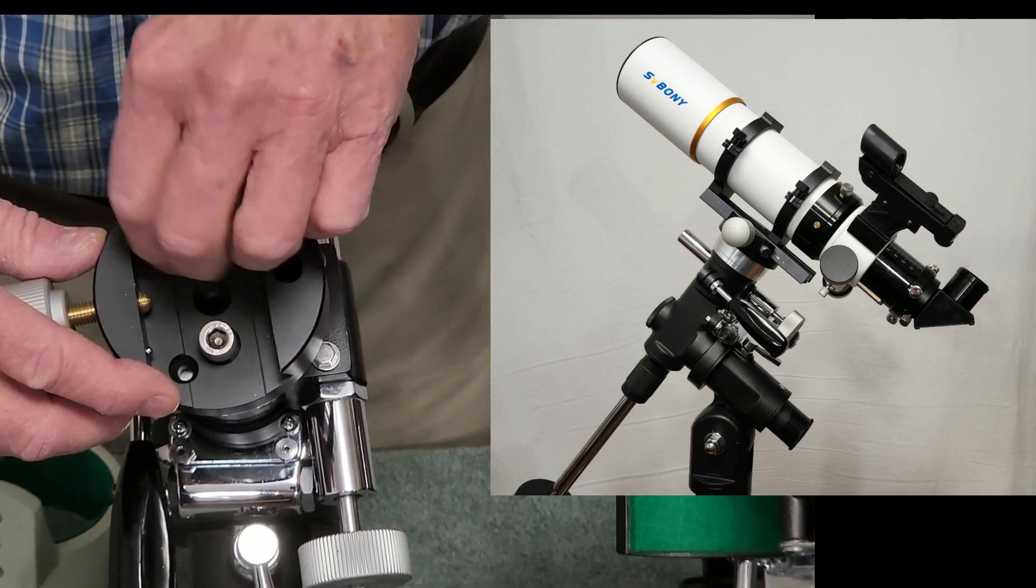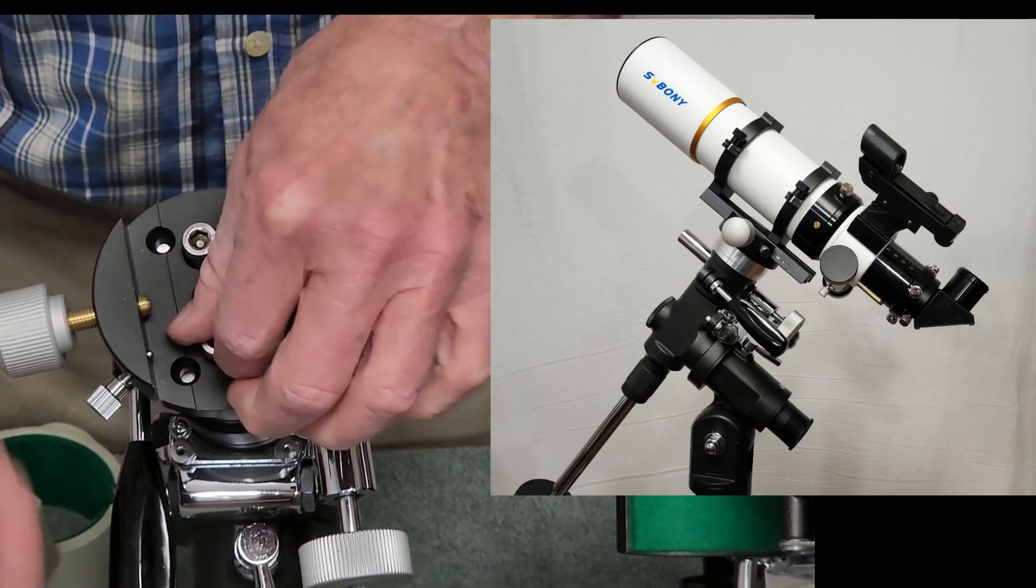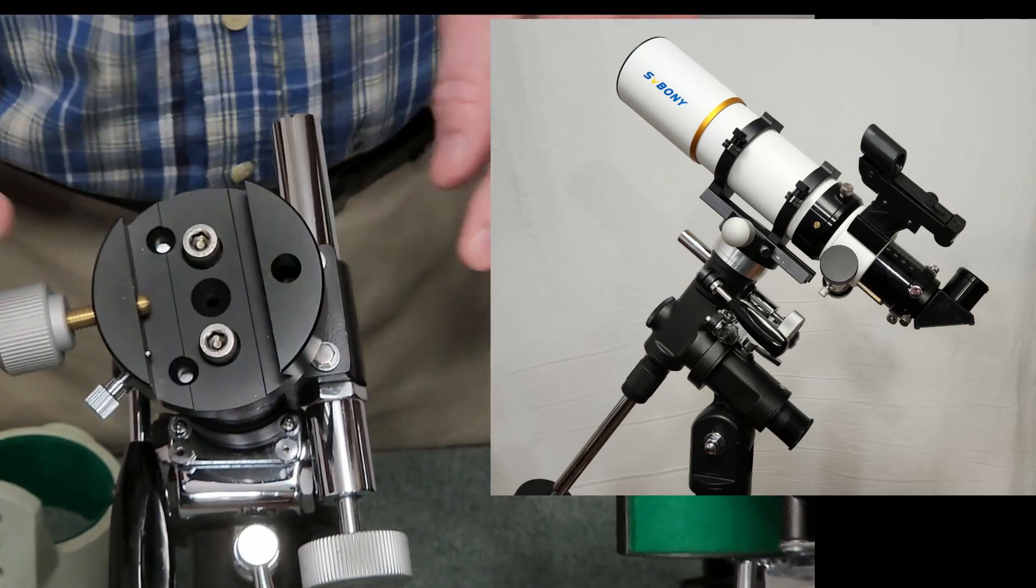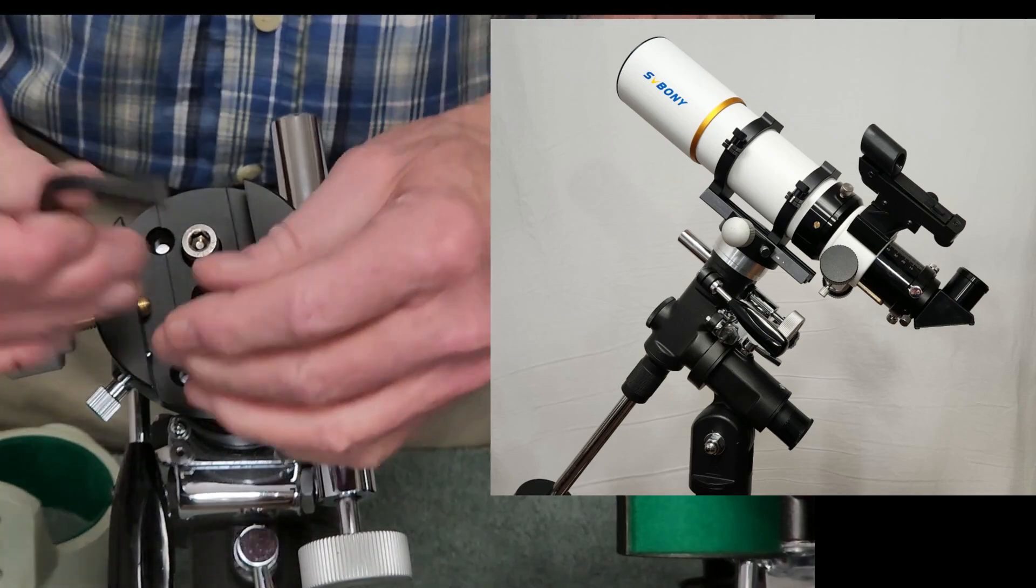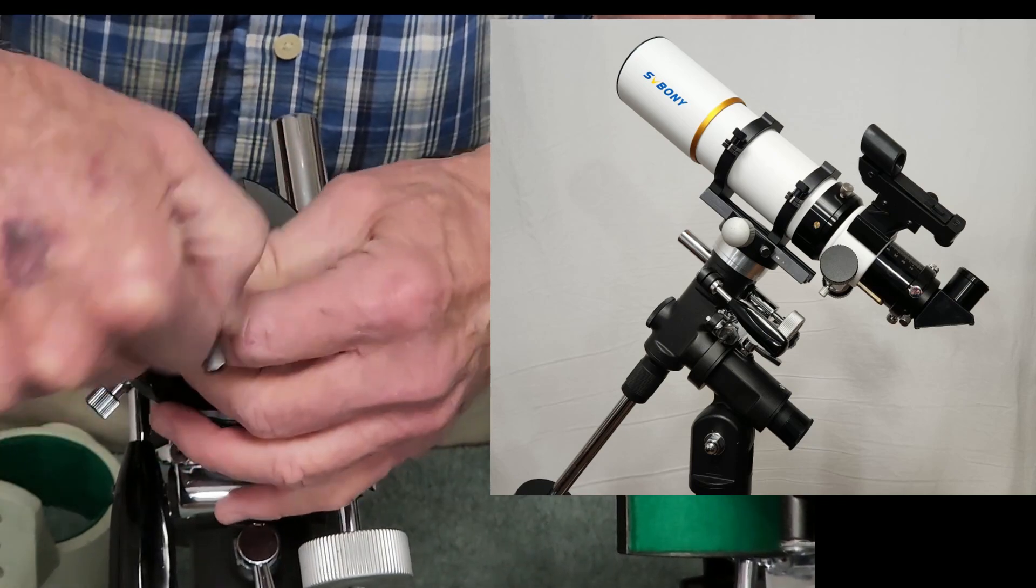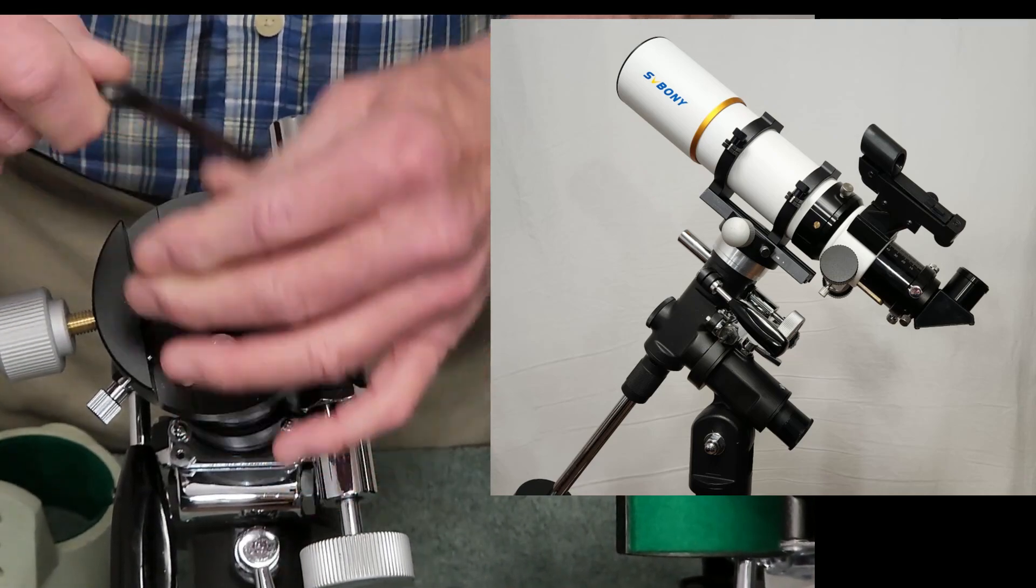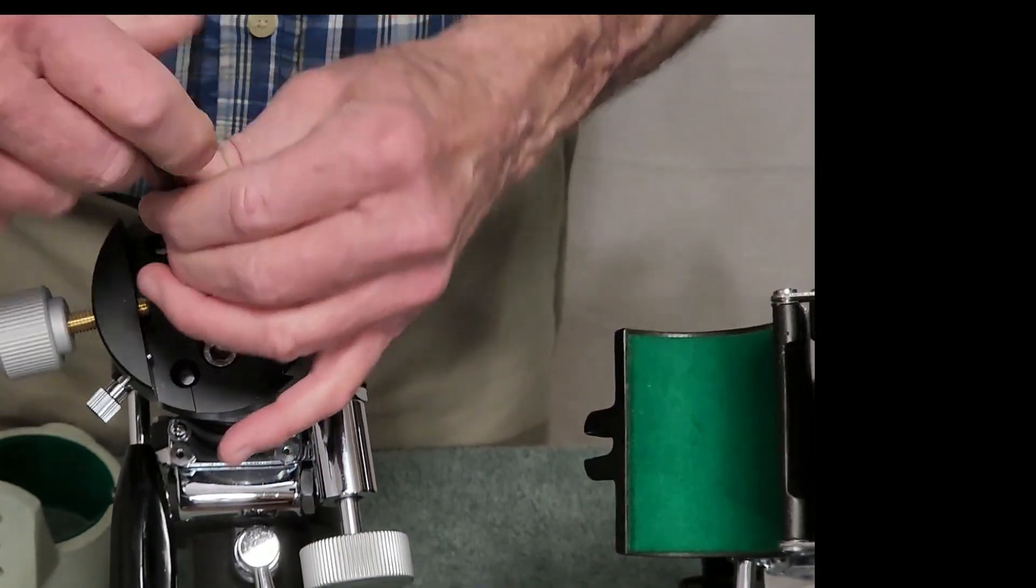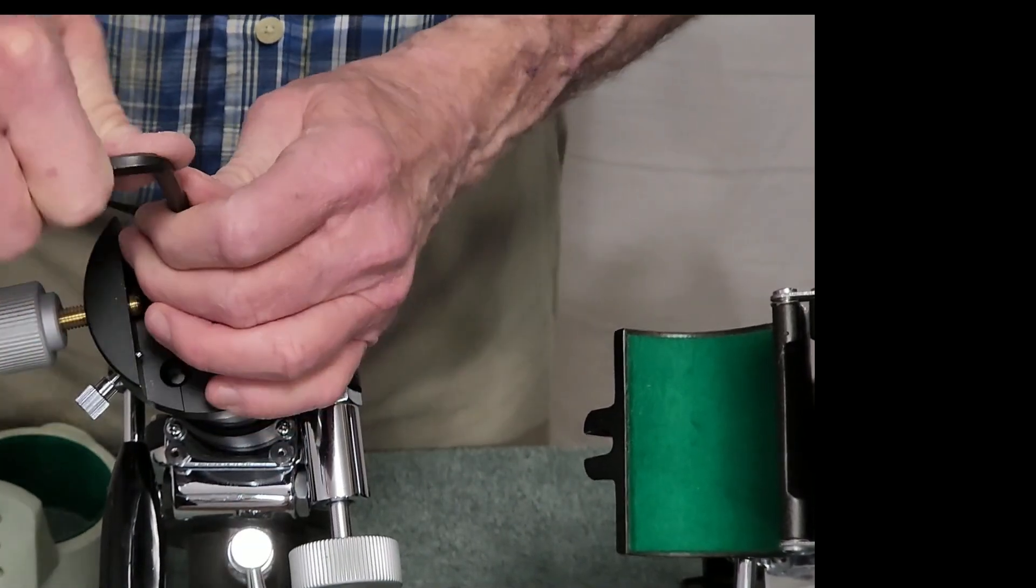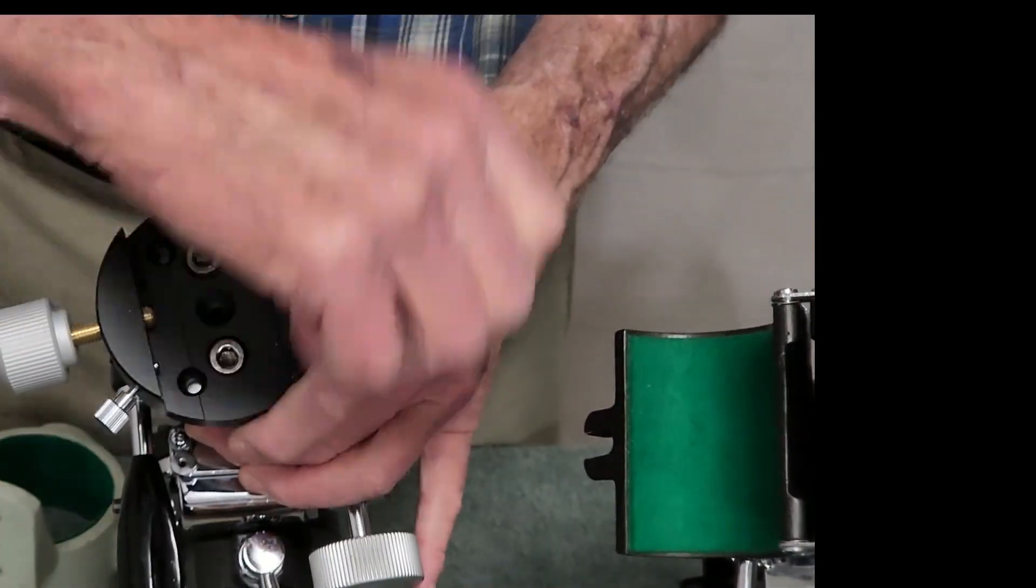So, you've converted this from a Takahashi to a systematized Takahashi and then to a Vixen. So, you've really morphed this mount by quite a bit. Now, you have an extremely useful little mount with a Vixen Dovetail. You can put a lot of stuff on there. Anything that's within the right weight capacity for this mount is a snap to put on there.